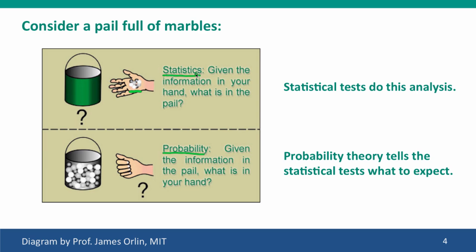On the other hand, if you knew the properties of the marbles in the bucket, the frequency of each color, you could use probability analysis to predict what might be in a small sample of the marbles that you pulled out with your hand. And in fact, the ability of statistics to predict from a sample the properties of the population derives from probability analysis that specifies what properties a sample would have given the properties of its population that it's derived from.